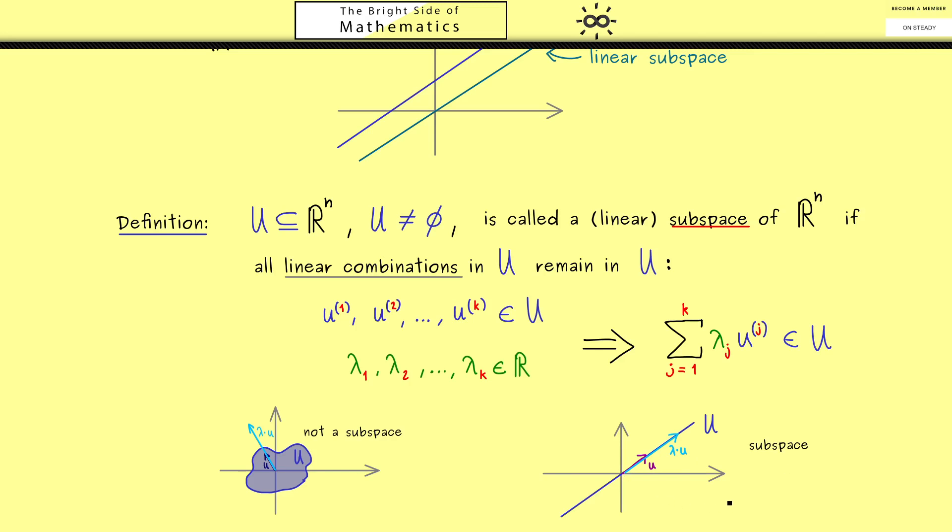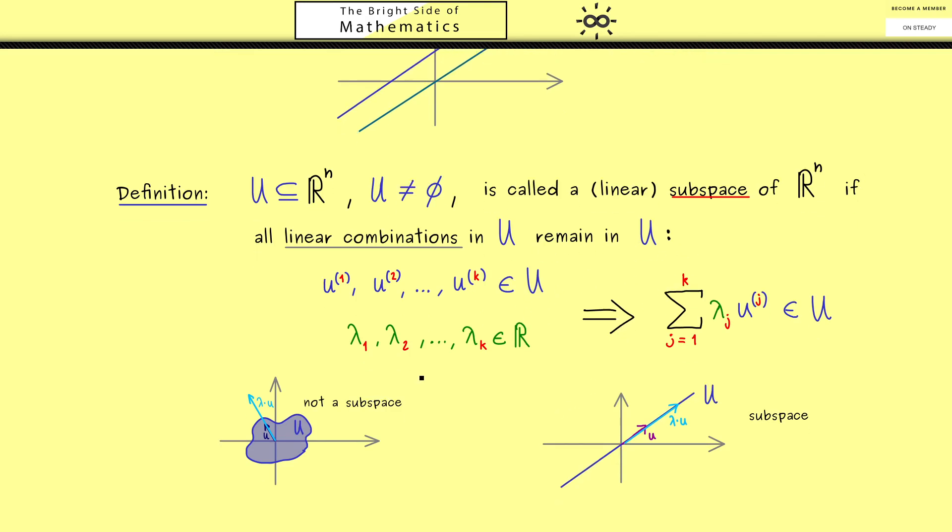So what you can see now is that a linear subspace is a vector space in the sense of the properties of the last video. More precisely, in the subspace U all the calculation rules like in Rn are satisfied. This means if we have a set U that is a subspace, we don't need anything outside because we can do all the calculations in U itself. And this is exactly why the notion subspace is so important.